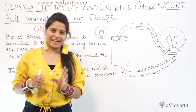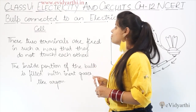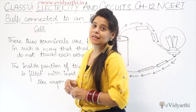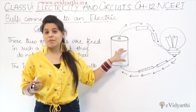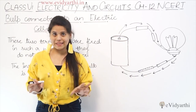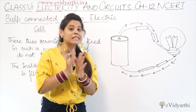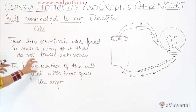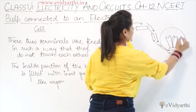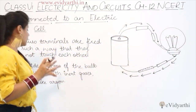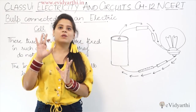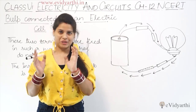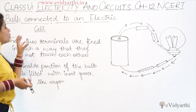These two terminals are fixed in such a way that they do not touch each other - just like in a normal cell, the positive and negative parts cannot touch each other. The bulb's terminals are fixed so they cannot touch each other. Also, the inside portion of the bulb is filled with inert gases like argon. So the inside of a bulb is not empty - it is filled with inert gases like argon.